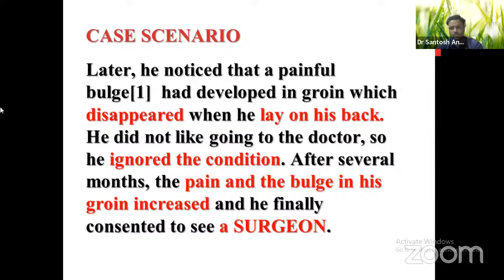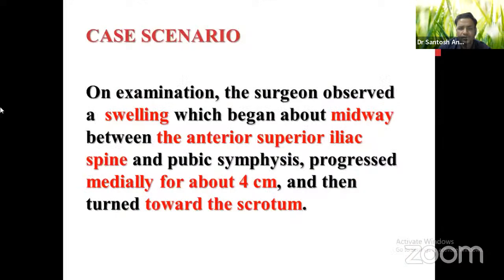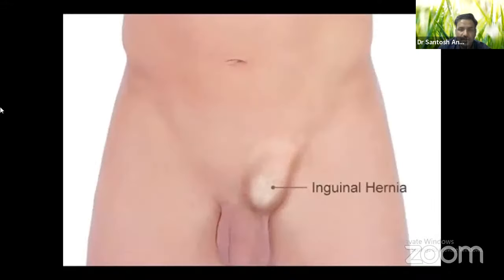He did not like going to the doctor, like most patients in the Indian setup — they don't visit until it is painful, symptomatic, or an emergency condition. So he ignored the condition. After several months, the pain and bulge in his groin increased. He finally consented to see a surgeon. On examination, the swelling began about midway between the anterior superior iliac spine and pubic symphysis, progressed about four centimeters, and then turned towards the scrotum. The surgeon made a diagnosis of inguinal hernia.